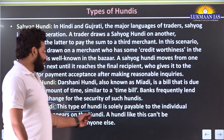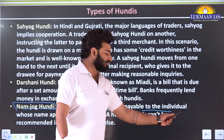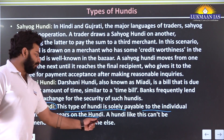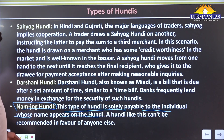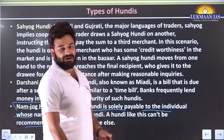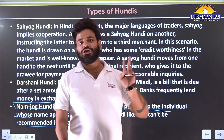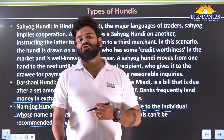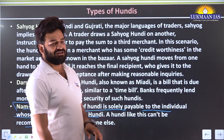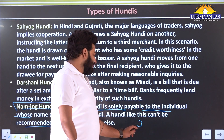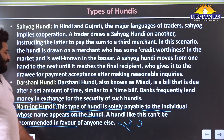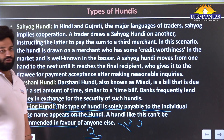The third type is Naam Jog Hundi. This type of Hundi is solely payable to the individual whose name appears on the Hundi - it cannot be endorsed in favor of anyone else. While a Hundi generally can involve three people, in Naam Jog Hundi only two people are involved: the issuer and the receiver.